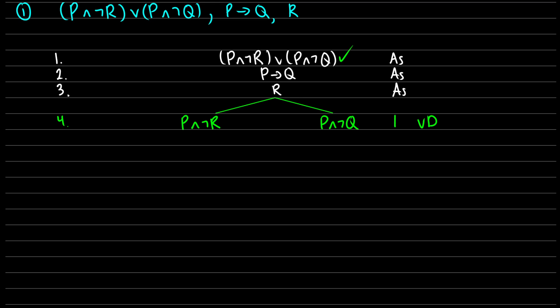At this point we have P and not R on the left, and P and not Q on the right, so we can do AND decomposition on both. For lines five and six, we take these from line four and do AND decomposition: if P and not R is true, then P is true and not R is true. If P and not Q is true, then P is true and not Q is true. So now we've broken these up.